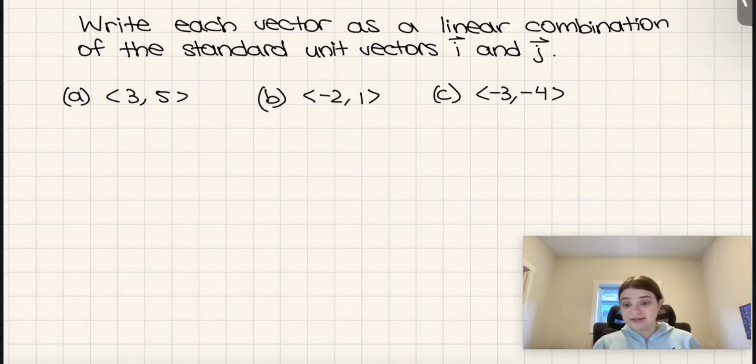So I get questions like this often, but it's actually very simple. All we need to do is multiply the first number we have by i and the second number we have by j in each situation.